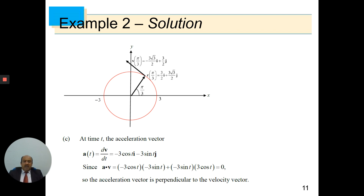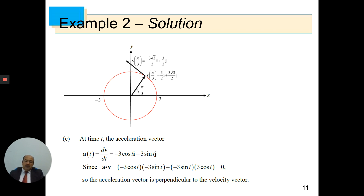Part c: At time t, the acceleration vector is dv/dt = −3cos(t)·i − 3sin(t)·j. Computing the scalar product a·v, it equals 0. Therefore, the acceleration vector is perpendicular to the velocity vector.